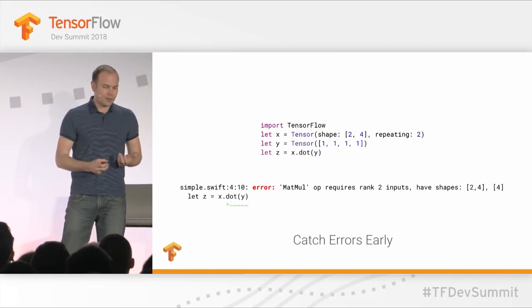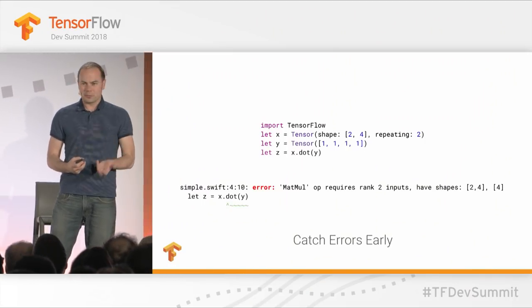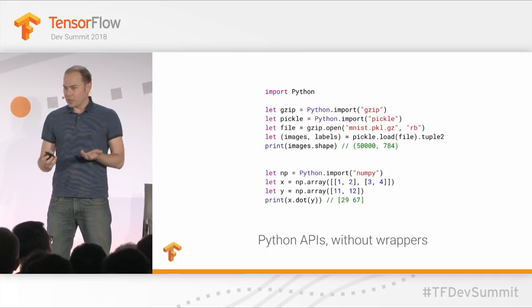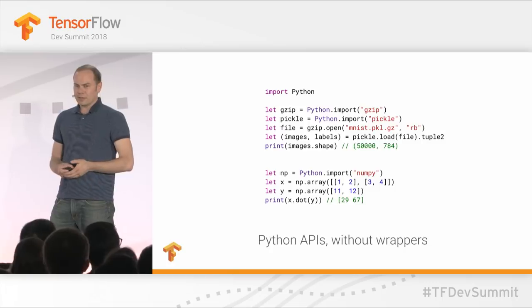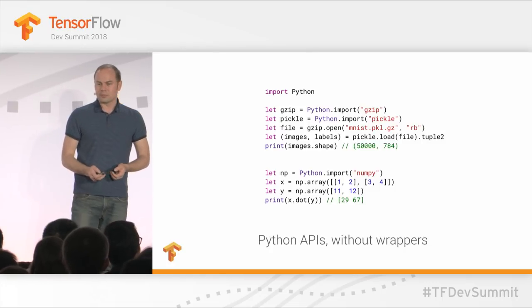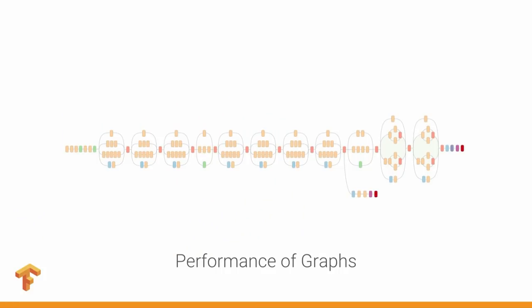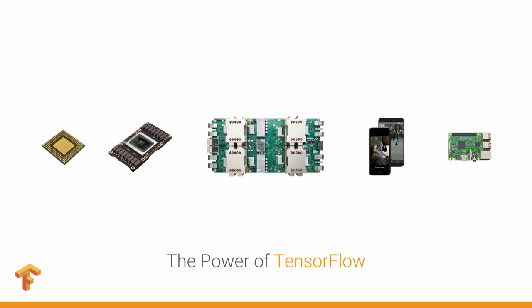To recap quickly: Swift has an interpreter and it works just like you'd expect. Swift is designed to catch errors early, and we've started building in support for catching TensorFlow-specific mistakes right into the compiler. You can directly use arbitrary Python APIs and other dynamic languages directly from Swift, giving you full access to the data science ecosystem. Swift is also generating standard TensorFlow graphs, including control flow, which gives you the full performance of the session API. Graphs also give you access to everything TensorFlow can do, including devices spanning from the tiniest Raspberry Pi all the way up to a TPU supercomputer.